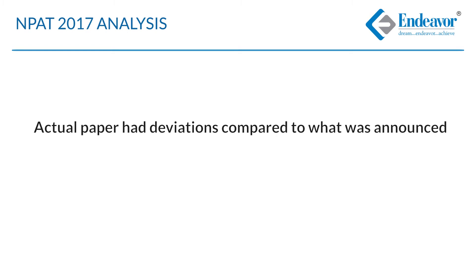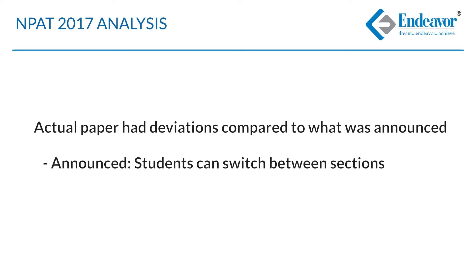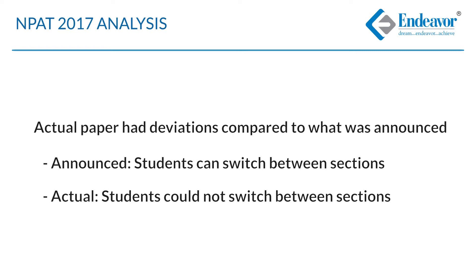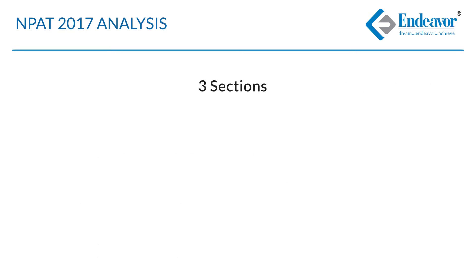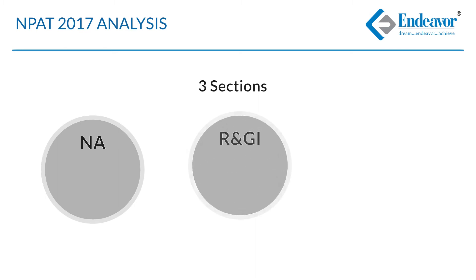As per the official announcement and demo test, it was mentioned that students would be allowed to switch over sections in between and choose a section of their choice. However, on the actual day of exam, this could not happen and students had to attempt whichever section was presented to them first. The first section was numerical ability, the second was reasoning and general intelligence, and the third was English proficiency.